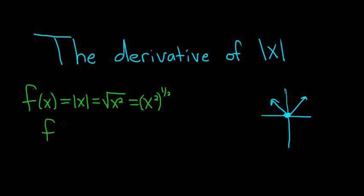Then you can take the derivative and use the chain rule. So you put the 1 half in the front, so you get 1 half x squared. You subtract 1, right? 1 half minus 1 is negative 1 half, times the derivative of the inside. It's the chain rule. The derivative of x squared is 2x.